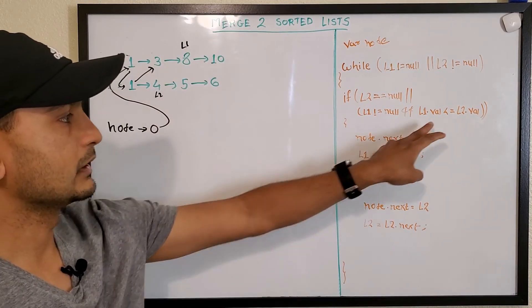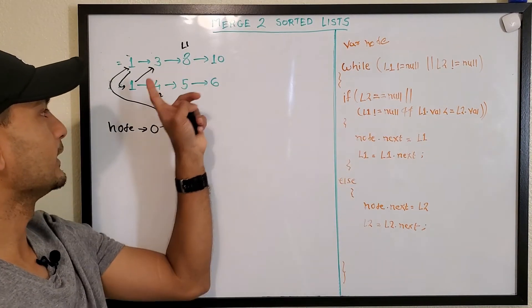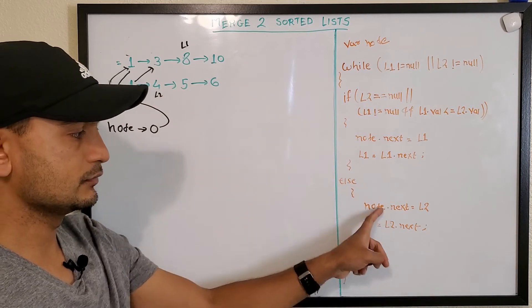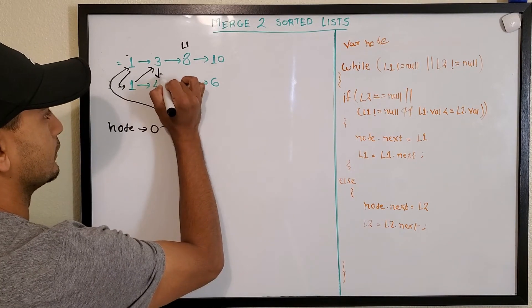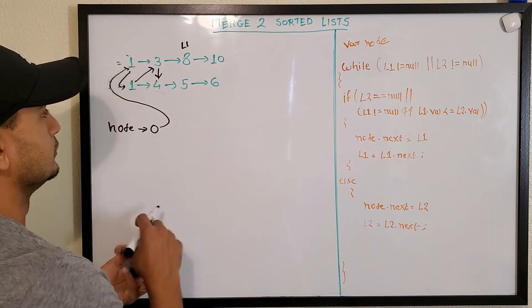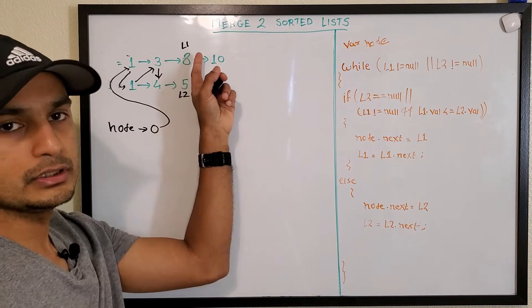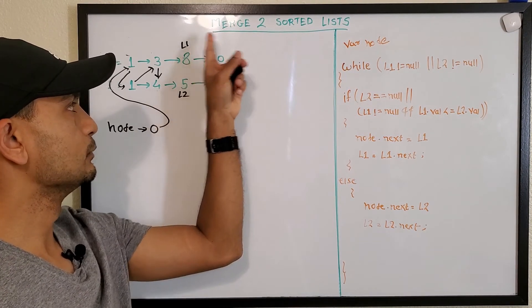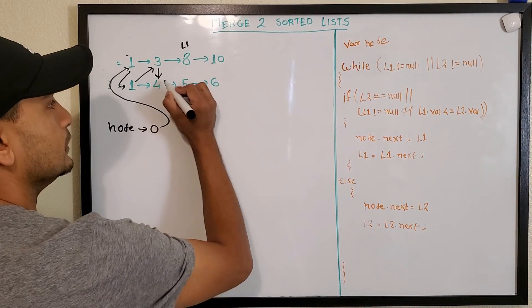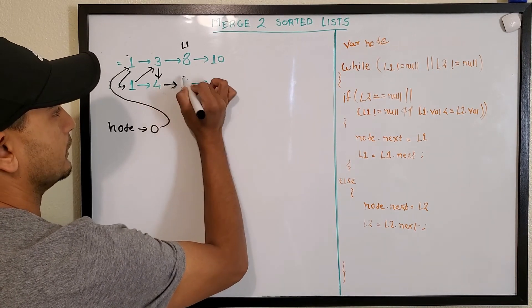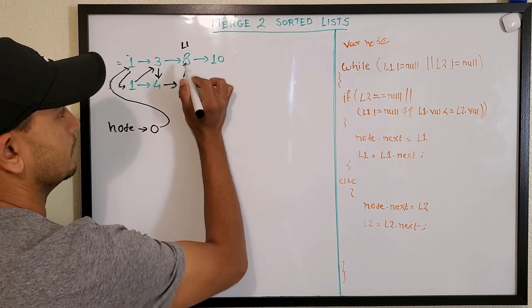Now we'll compare L1 value with L2 value, which is 8 and 4. Four is less, so we'll do here. This will point here and L2 will move to here. Eventually when we keep doing this, they both will be null and we'll get our sorted list like this.